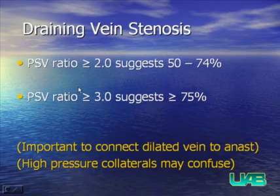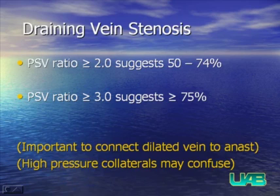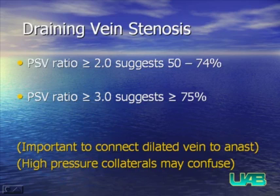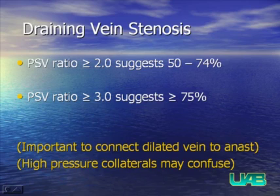In the draining vein, a two-to-one ratio is consistent with a 50% stenosis, while a three-to-one ratio is more suggestive of a severe stenosis greater than 75%. When you see dilated veins in the draining vein, look to see whether they are very tortuous and whether there is adequate flow volume. If there is a draining vein stenosis, the veins will often try to bypass the stenosis through collateral vessels — you could be seeing a high-pressure collateral trying to bypass the stenosis.